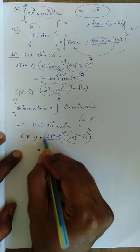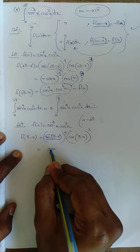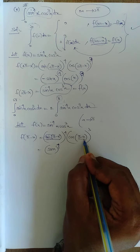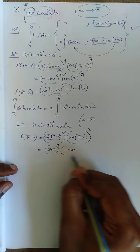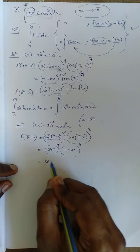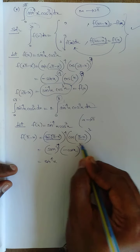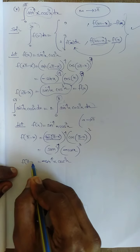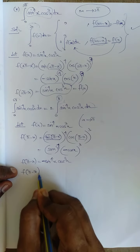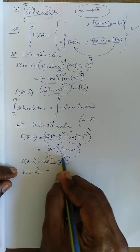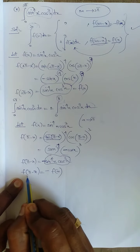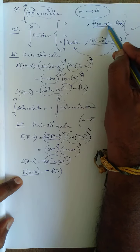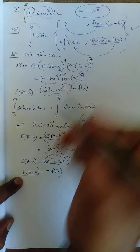Since π - x lies in the second quadrant: sine is positive, so sin(π - x) = sin x, raised to power 4. Cosine is negative in the second quadrant, so cos(π - x) = -cos x, raised to power cube. Since cube is an odd power, the negative remains: result is sin⁴x · (-cos³x) = -sin⁴x · cos³x = -f(x). Therefore f(π - x) = -f(x), which means the integral equals 0.